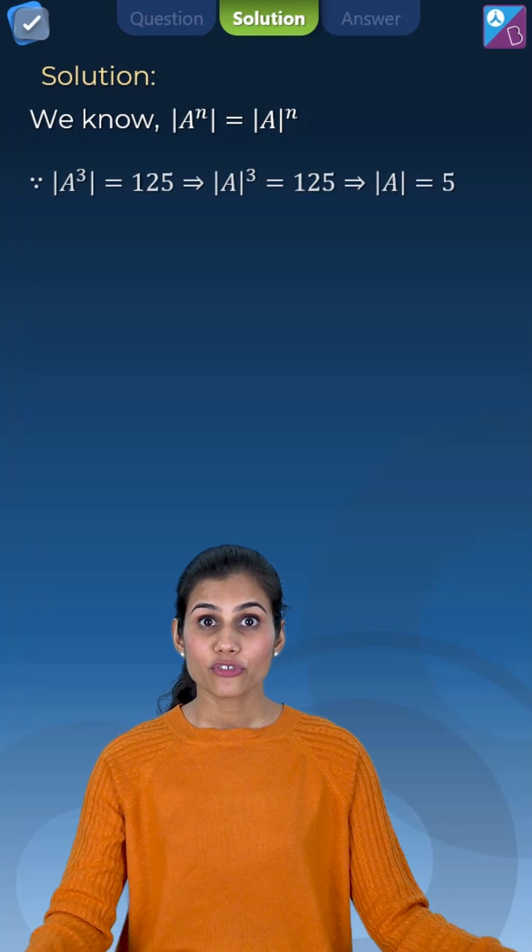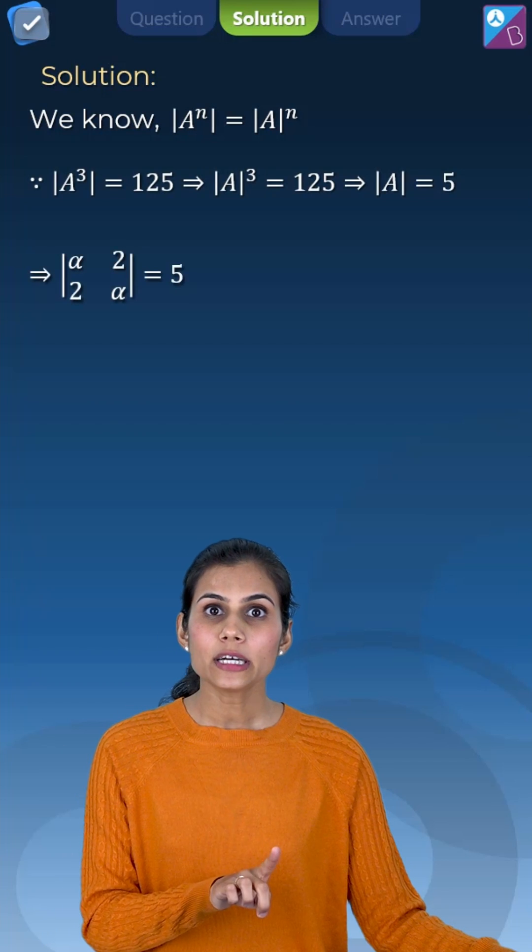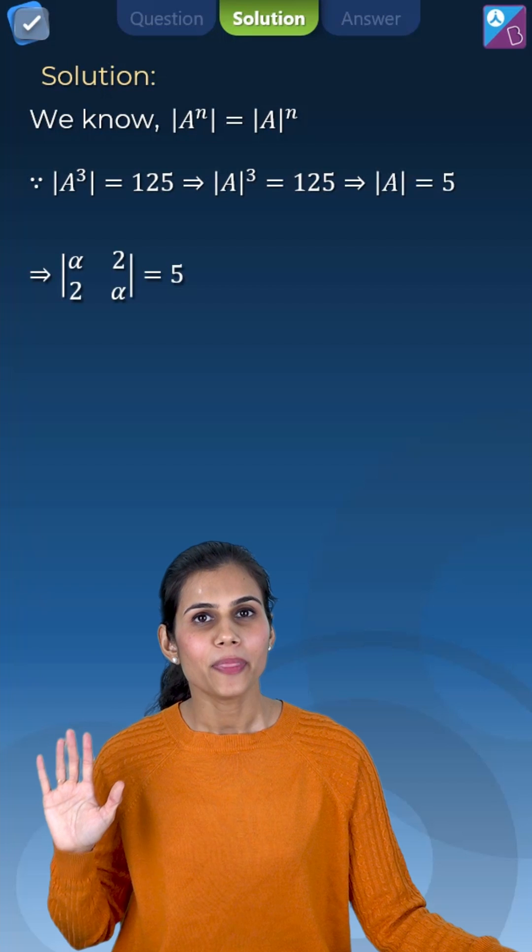Now A is a matrix which is already provided to us. So compute its determinant and equate it to 5. That's it.